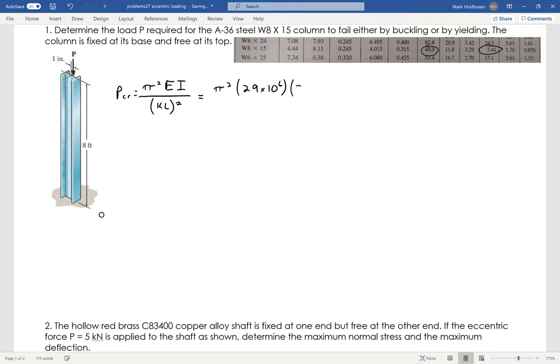So that's going to be 3.41, and again that's going to be inches to the 4th. I look that up in the table for the cross section that I've got. I'm going to divide that by K, which is 2 for fixed-free, times 8 times 12, because I want to get everything in inches. So 8 feet times 12, whole thing squared like that.